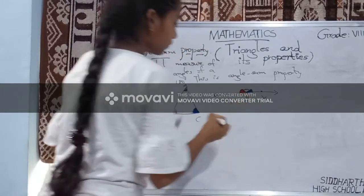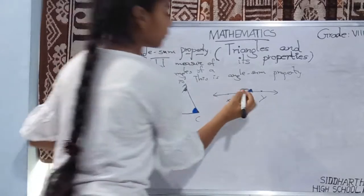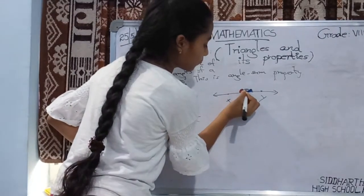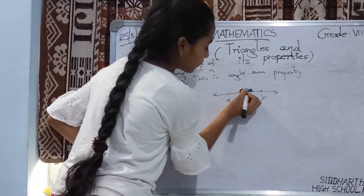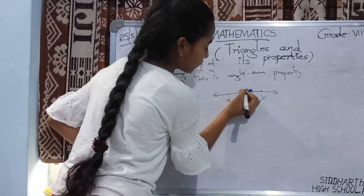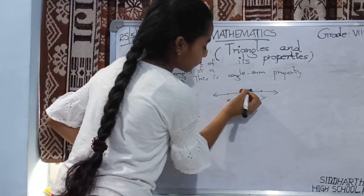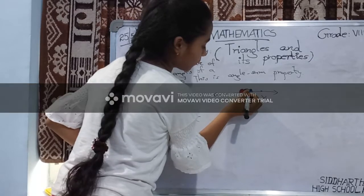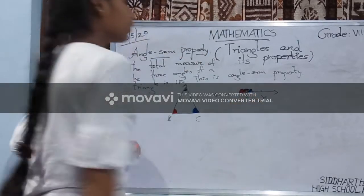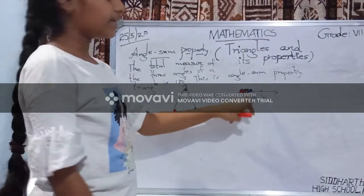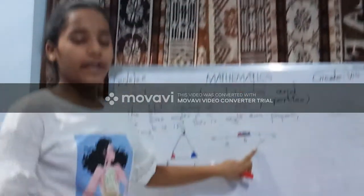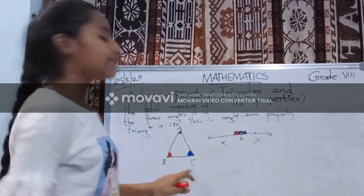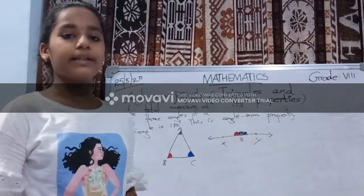Next, draw a triangle below. We see that these three angles constitute a straight angle. So the measure of the three angles of a triangle is equal to 180 degrees.